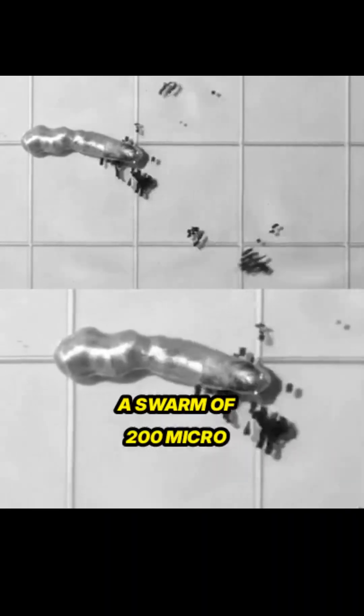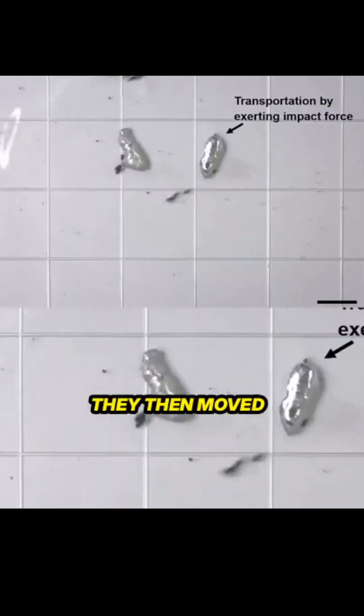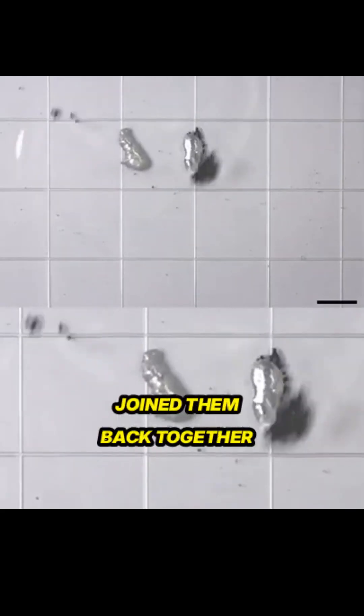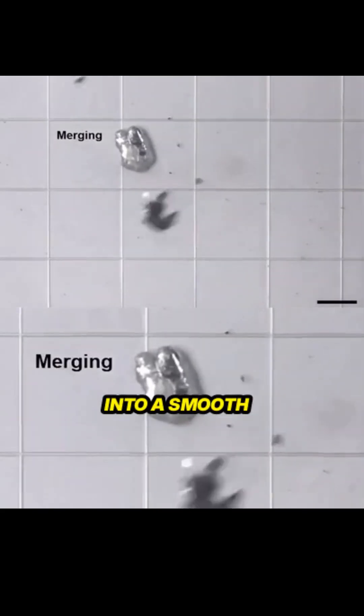A swarm of 200 micro-robots successfully separated heavy liquid metal into smaller pieces in just 5 seconds. They then moved the pieces, joined them back together, and shaped the metal into a smooth sphere.